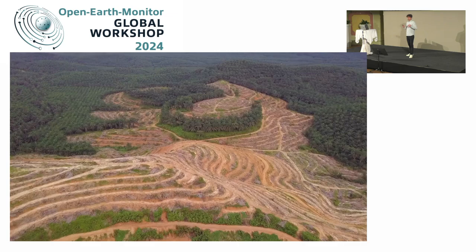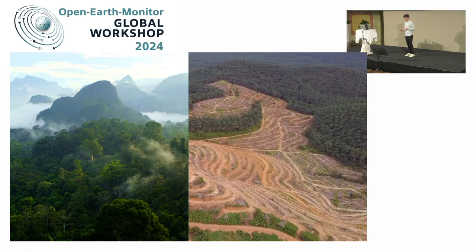Now we come to understand that we need the diversity and the species, all these connections that we had before. A land like this cannot support us in the long term. So the question is: how did we get to this degraded state of land? And more importantly, for the areas where it is possible, how do we go back to this intact connection of species interaction?